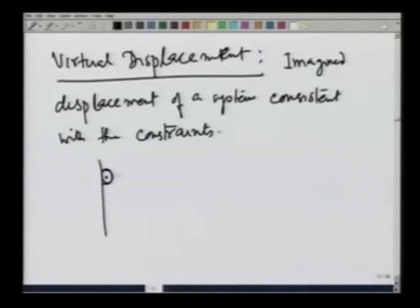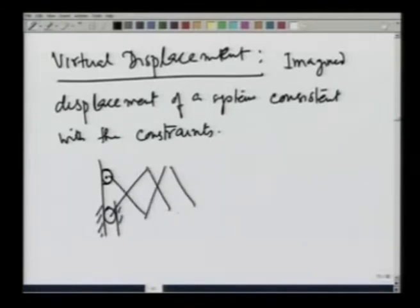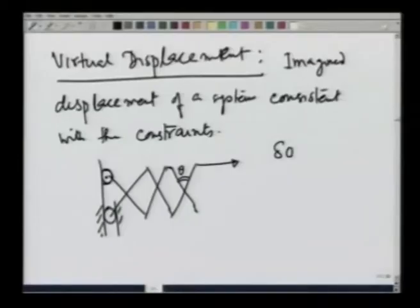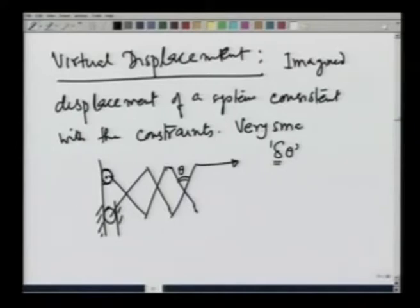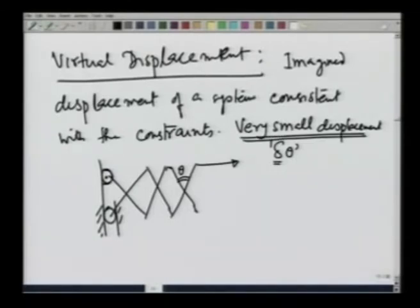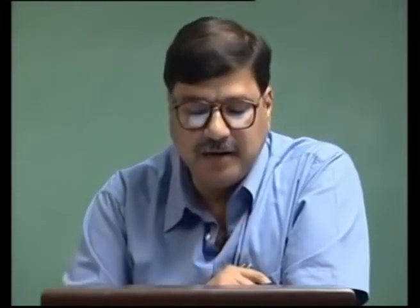This mechanism again — if I go back to it, the only way I can change its configuration is by changing theta. So, if it is in equilibrium under this force F and its own weight, the virtual displacement would be delta theta. One thing I should make clear: I am writing it delta theta, so virtual displacement is also a very small displacement. The change is very small — you imagine a very, very small change about equilibrium.